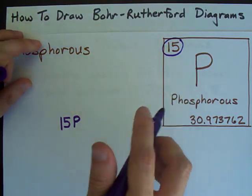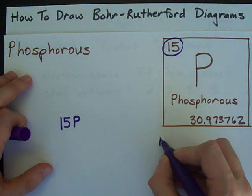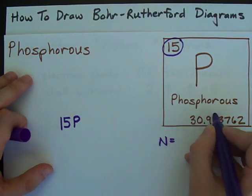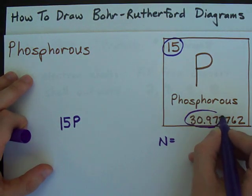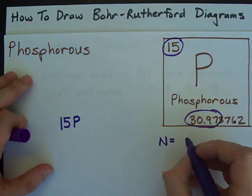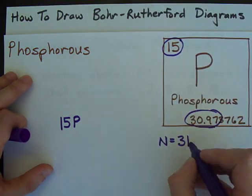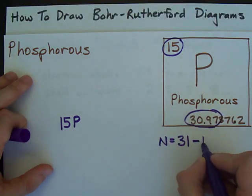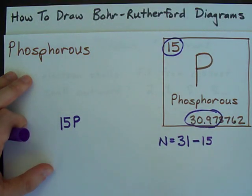The number of neutrons is going to be the atomic weight, which in this case is about 31, and you have to round it to the nearest whole number, 31, minus the number of protons that you have, in this case 15.